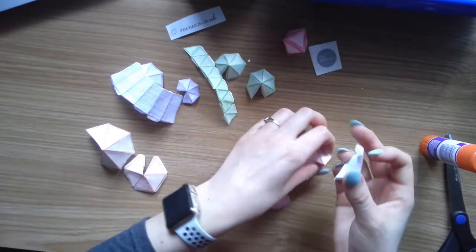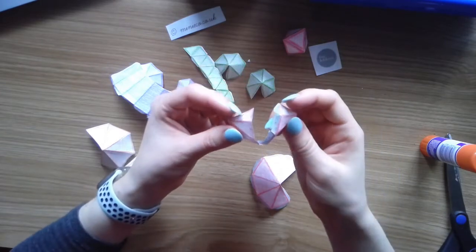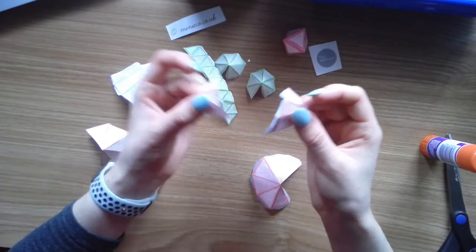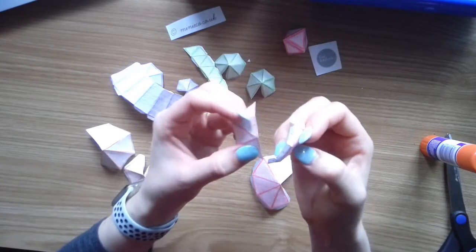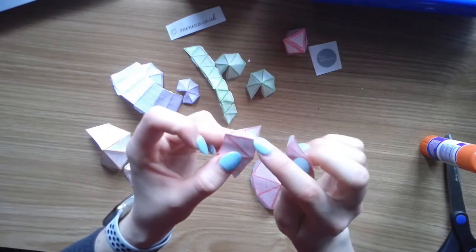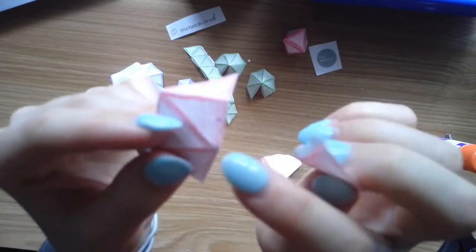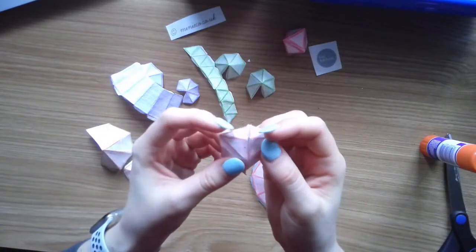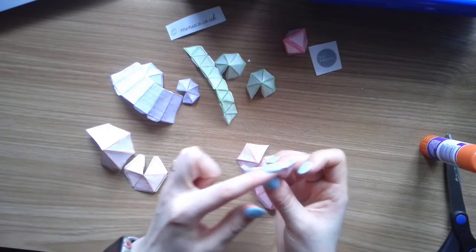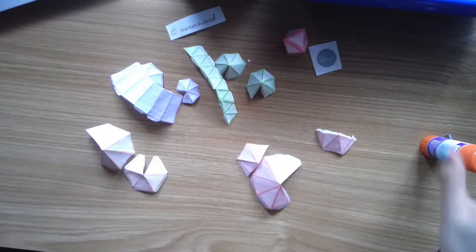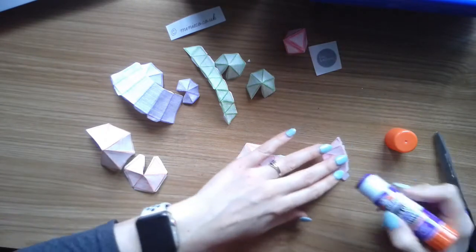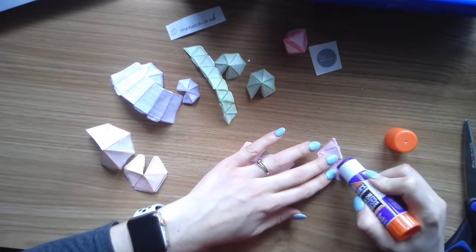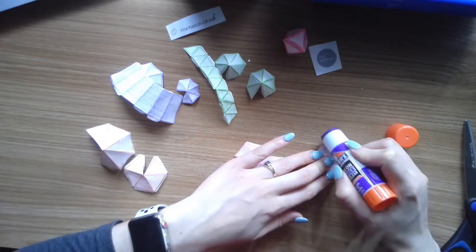So what we're going to do first is start by gluing the two smaller pieces that look like trapezoids together. You'll notice there's numbers on them, they're really teeny tiny, but it says 1, 2, 3, 4. So we're going to go 1, 2, 3, 4 and glue those together. I'm going to put glue on all those tabs. It might make a sticky mess, that's okay.